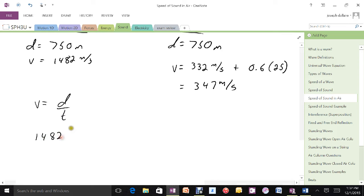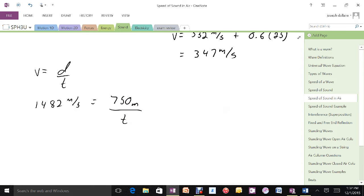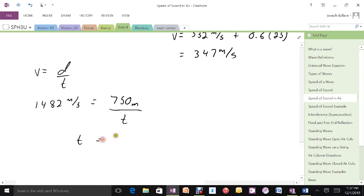1,482 meters per second equals 750 meters divided by T. So if I bring the T up to the left-hand side and bring the other guy down, I can see that it's going to take the sound wave that travels through the water about half a second to get there.